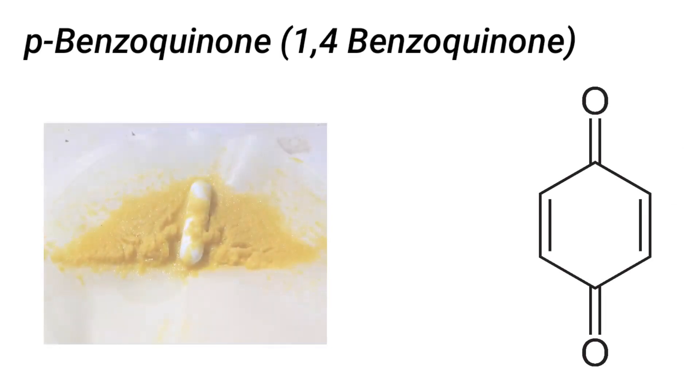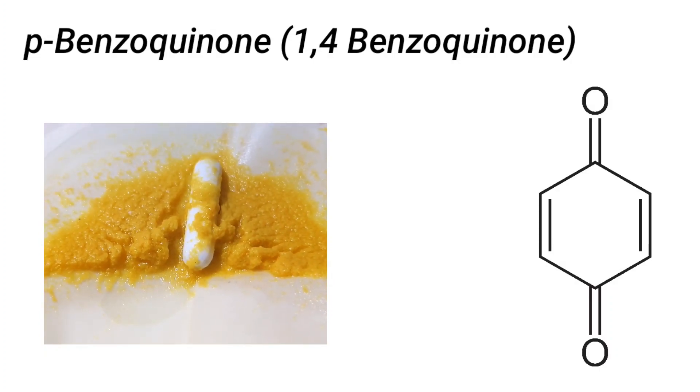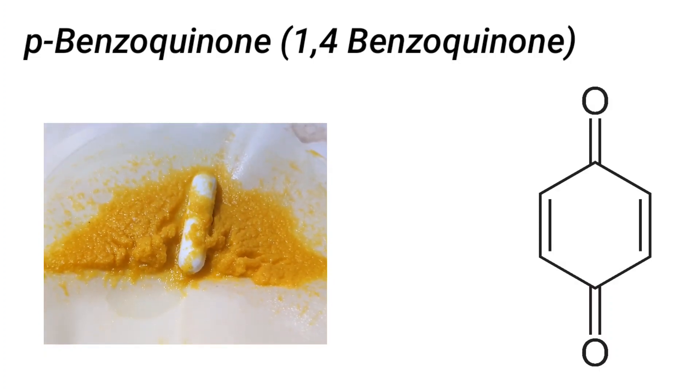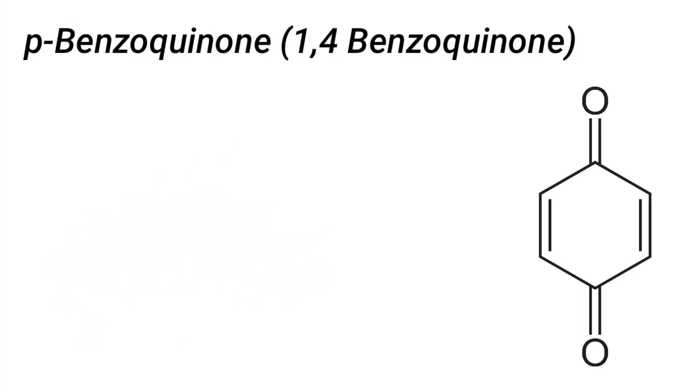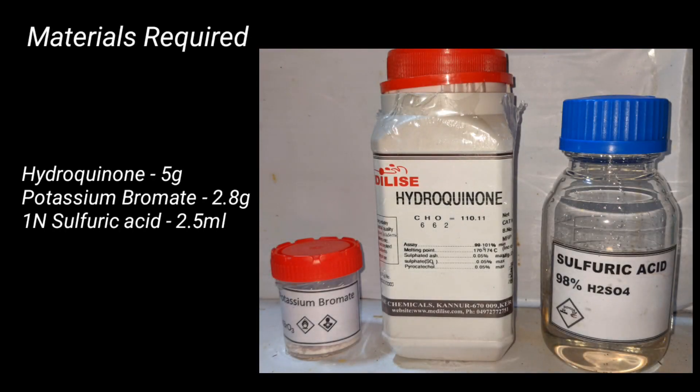p-Benzoquinone or simply quinone is an organic compound that has a bright yellow color and a characteristic irritating odor, and can even cause irritation to the eye and watering from the eye. Materials required for this synthesis include 5 grams of hydroquinone, 2.8 grams of potassium bromate, and 2.5 milliliters of one normal sulfuric acid.